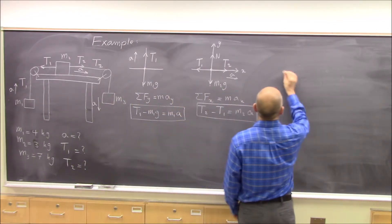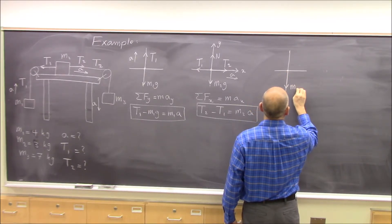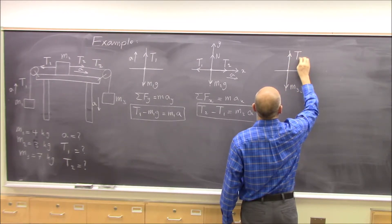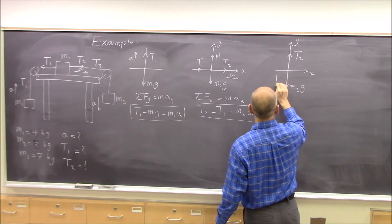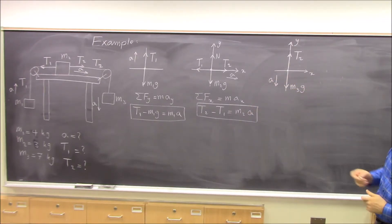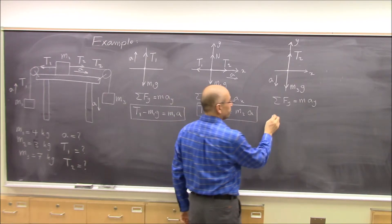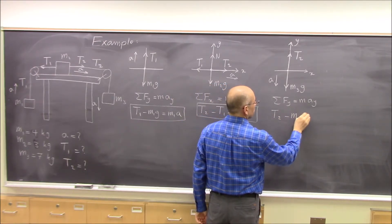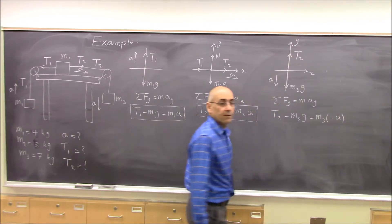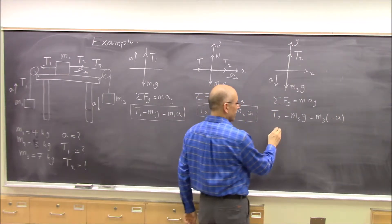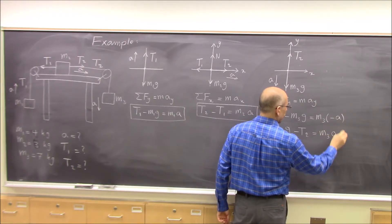That comes from m3. For m3, you have m3g and t2 in y direction. And the acceleration is downward. So now, doing sum of fy equal to m ay for this one. Sum of fy means t2 minus m3g equal to m3 times y component of the acceleration, which is negative a. In order to make this positive, I multiply by negative sign, you get m3g minus t2 equal to m3 times a. And this is my third equation.